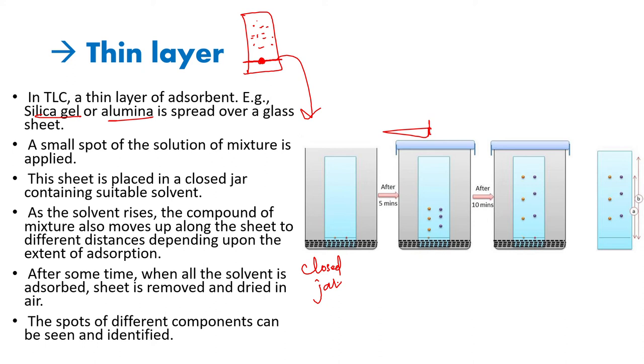As the solvent rises, our mixture also rises with different speeds because of the resistance provided by the adsorbent. The affinity and the resistance provided by the adsorbent cause different components to rise at different speeds. After some time, when all the solvent is absorbed, the sheet is removed and dried.